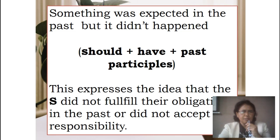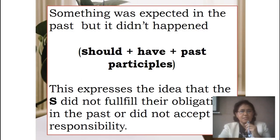When something was expected in the past but it didn't happen, we use 'should' with the pattern: should + have + past participle. Past participle is verb three. This expresses the idea that the subject did not fulfill their obligation in the past, or did not accept responsibility.